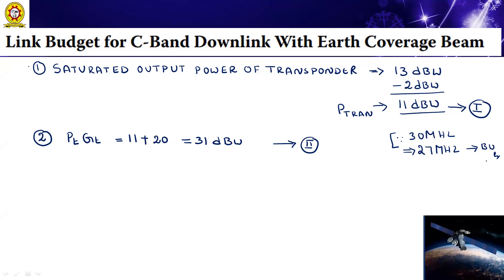The receiving earth station has an antenna with aperture diameter of 9 meters and gain of 47dB at 4 GHz. Now, how do we calculate the G/T ratio for the earth station? The next parameter to calculate here is the G/T ratio.